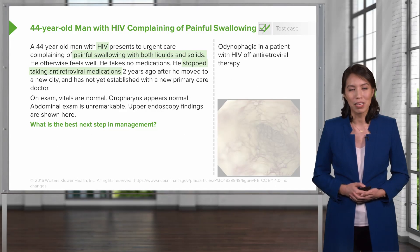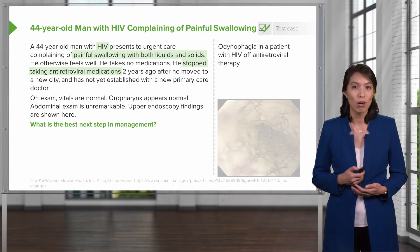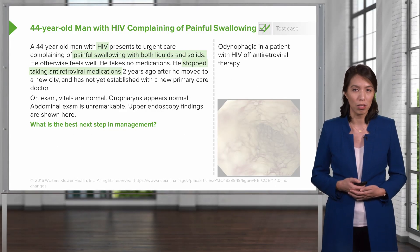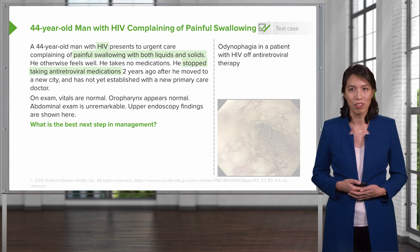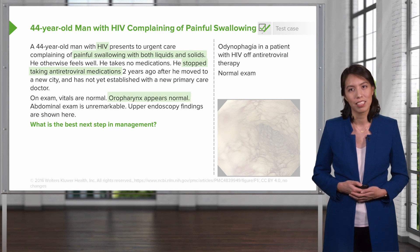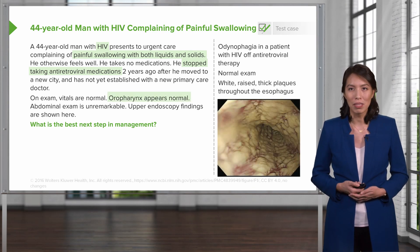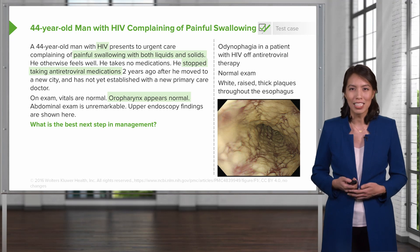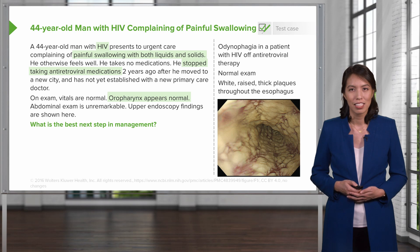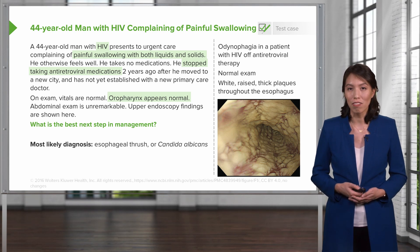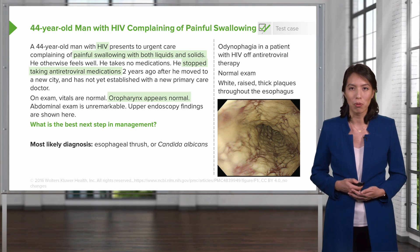Let's identify some key features of this case. He has odynophagia, or pain with swallowing. He's a patient with HIV off his antiretroviral therapy, and he has a normal exam otherwise. On endoscopy, he has these white raised, thick-looking plaques throughout his esophagus. The most likely diagnosis here is esophageal thrush, or Candida albicans.